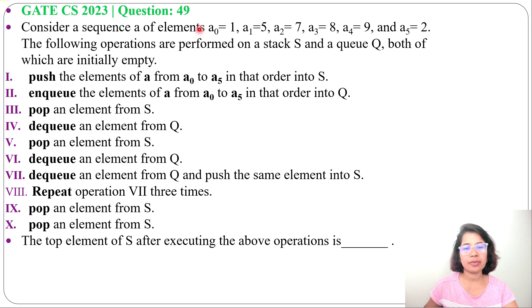Consider a sequence of elements: a0 equals 1, a1 equals 5, a2 equals 7, a3 equals 8, a4 equals 9, and a5 equals 2. The following operations are performed on a stack S and a queue Q, both of which are initially empty, and a set of operations are given starting from 1 till 10.